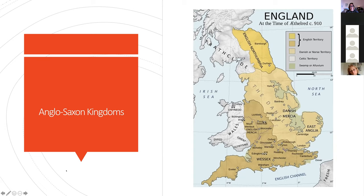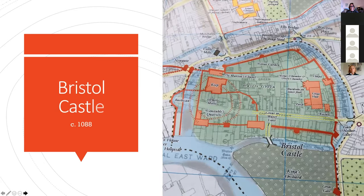By the mid 11th century Bristol had a mint, indicating it was a place of some consequence, and was engaged in regular trade with Wales and Ireland. After the Norman Conquest of 1066, the Normans used Bristol as a strategic headquarters for the spread of their settlements into south and east Wales. The Normans built a castle in Bristol as early as about 1088, blocking the landward approach and surrounding the castle with rivers. It was probably around this time that the first town walls were built as well.